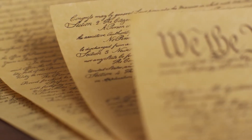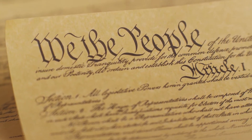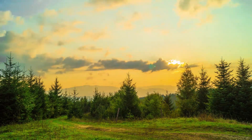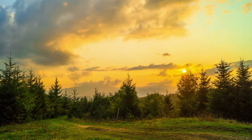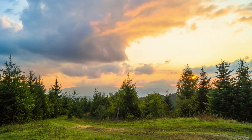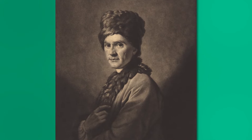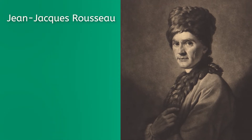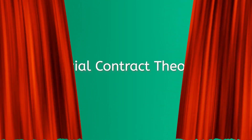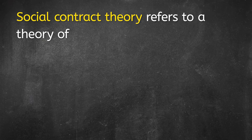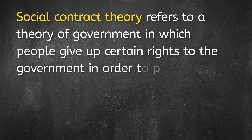So what does this have to do with constitutions? A constitution is like a contract — well, it's kind of a social contract between you and the government. A long time ago, there lived a political philosopher who wore a white wig and puffy shirts. The man was smart and said a lot of smart things. His name was Jean-Jacques Rousseau, and he went on and on about a very important theory: the social contract theory. Social contract theory refers to a theory of government in which people give up certain rights to the government in order to protect other rights.